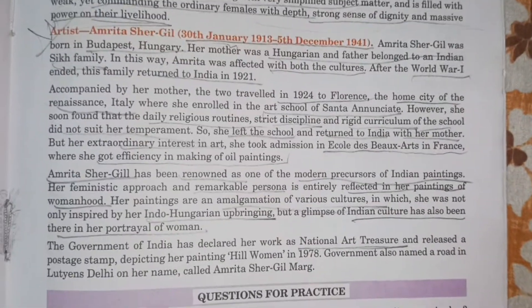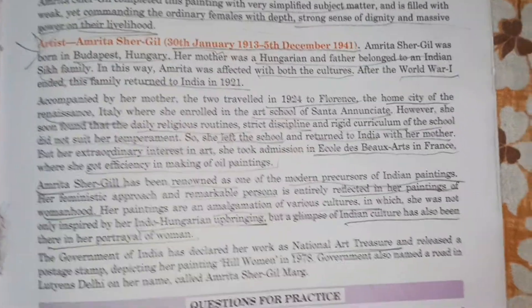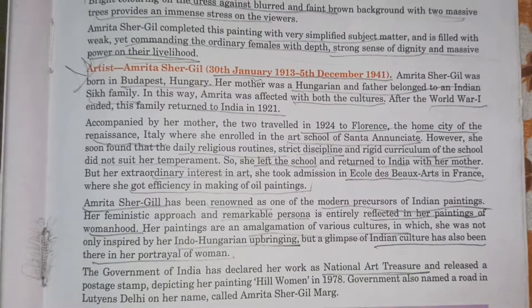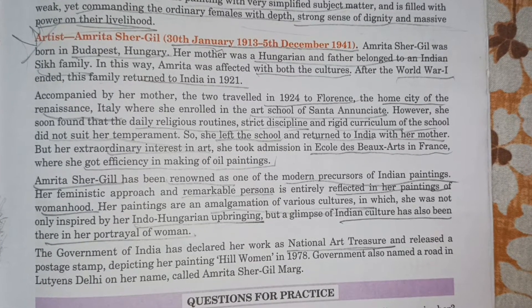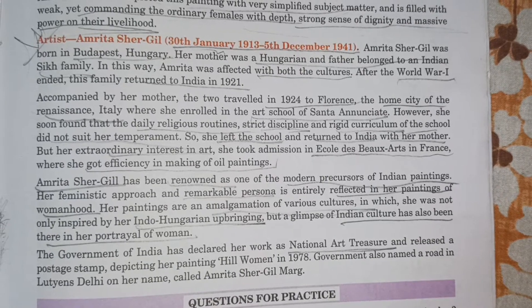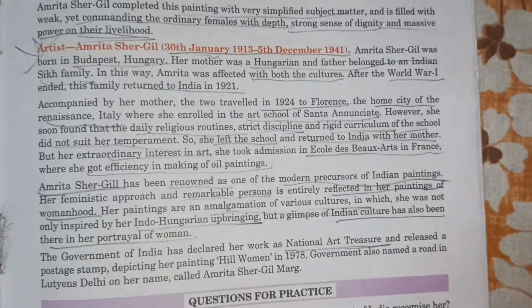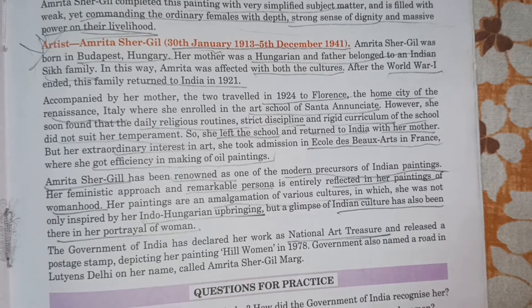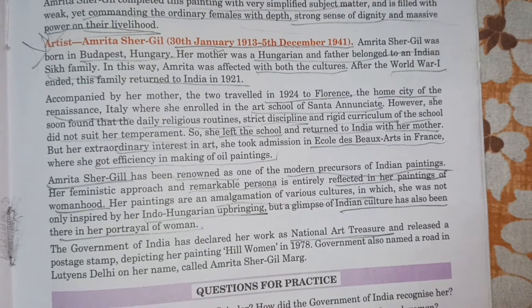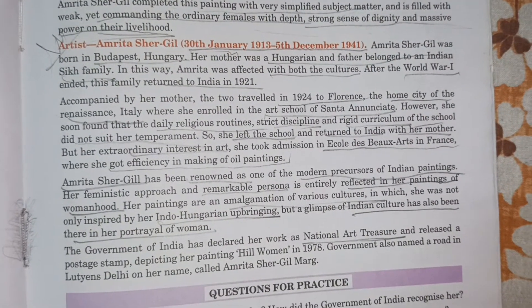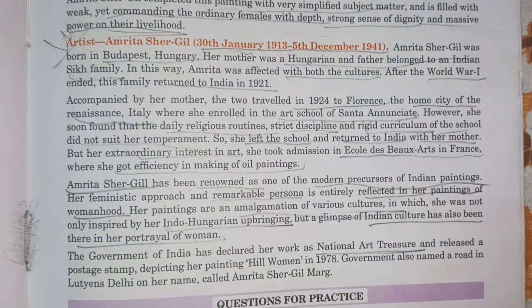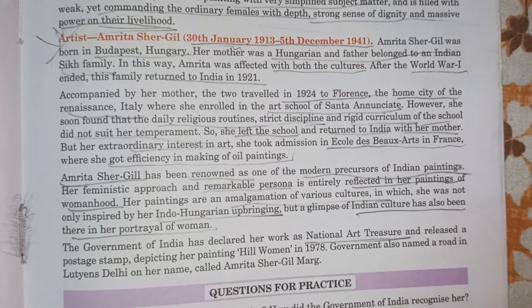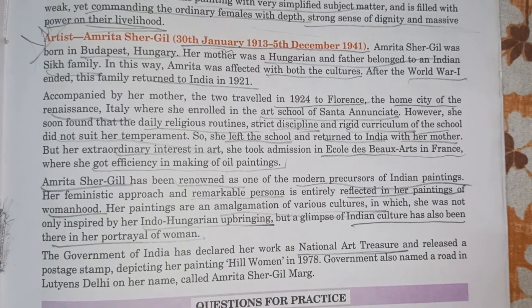This painting is truly about rural area women. Now coming to the artist: Amrita Shergil was born on 30 January 1913 and passed on 5 December 1941. She was born in Budapest, Hungary, outside of India. Her mother was Hungarian and her father belonged to an Indian Sikh family. In this way Amrita was affectionate with both cultures.